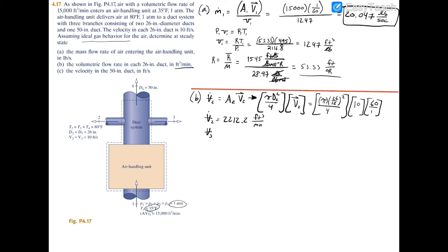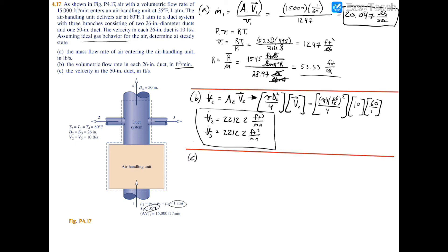Because the diameter at 2 and 3 are equal and the velocities at 2 and 3 are equal, Q3 also equals 2212.2 CFM. For part C, to find the velocity at duct 4, we rearrange the mass flow rate equation to: V4 = (ṁ4 × v4) / A4. To find the mass flow rate at duct 4, we perform a conservation of mass analysis: the incoming mass flow rate ṁ1 equals the sum of the exiting rates ṁ2 + ṁ3 + ṁ4.